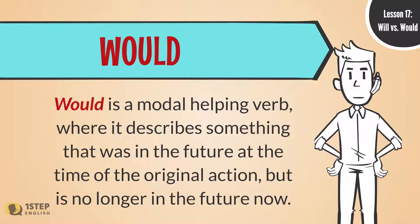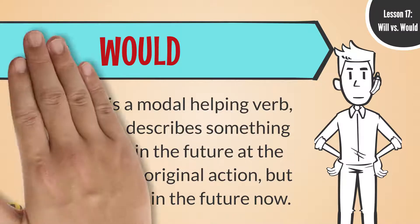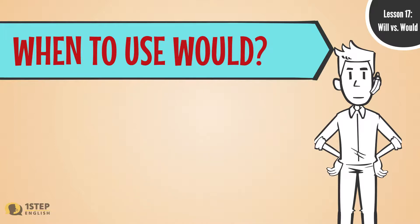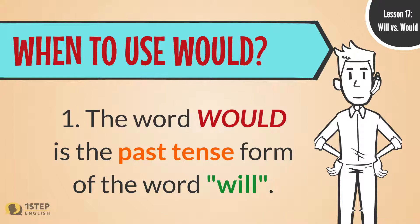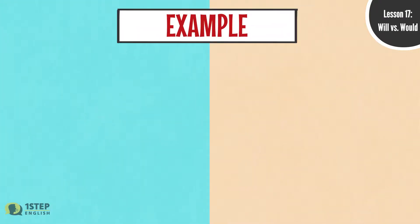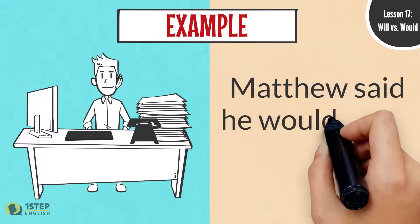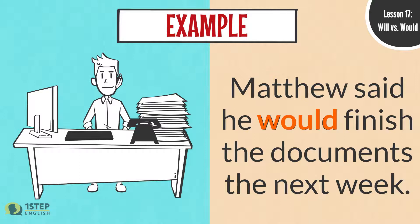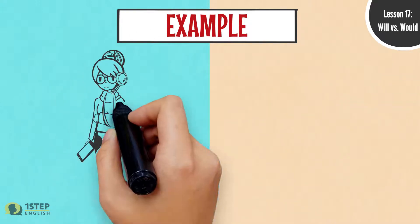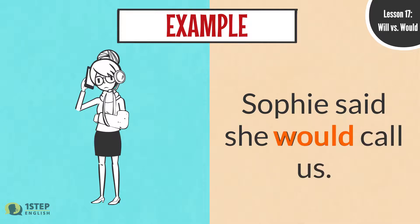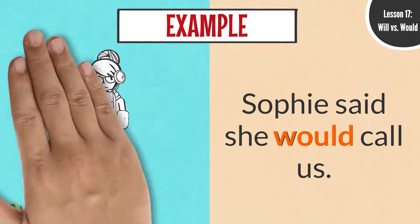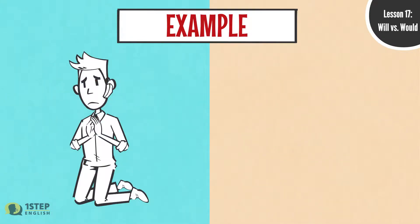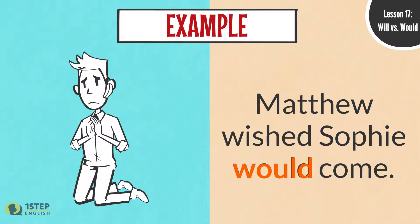Would is a modal helping verb, where it describes something that was in the future at the time of the original action, but is no longer in the future now. When to use Would. One: Would is the past tense form of the word will. For example: Matthew said he would finish the documents the next week. Sophie said she would call us. Matthew wished Sophie would come.